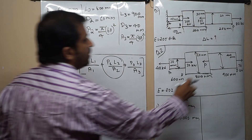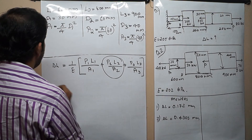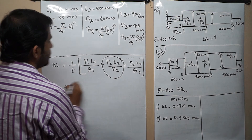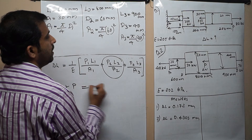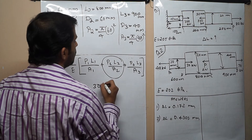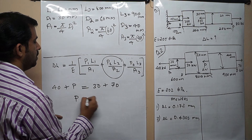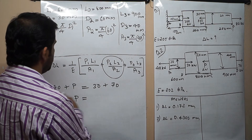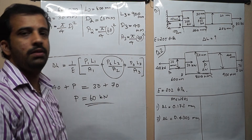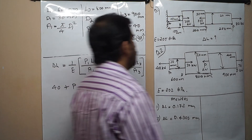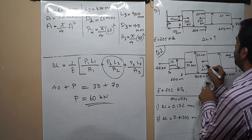Now I am going to calculate the load P. For equilibrium, the leftward forces must equal the rightward forces. Leftward acting forces are 40 kN plus P kN, and that should equal forces acting to the right: 30 kN plus 70 kN equals 100 kN. Therefore P equals 100 minus 40 equals 60 kN. We get the value for P as 60 kN.